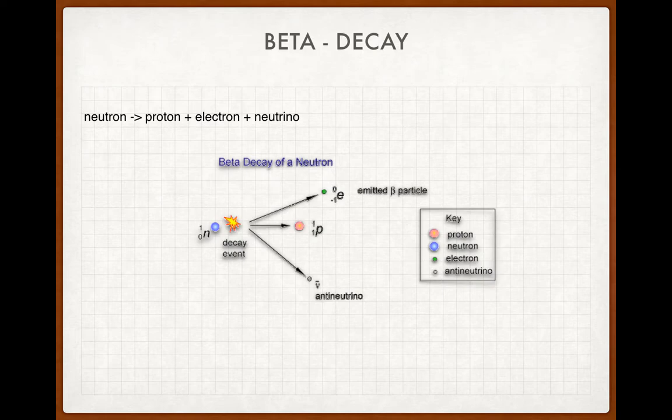So we have a little diagram there. We have the neutron on the left hand side, and the neutron decays, gives out a beta particle, becomes a proton, and gives out a neutrino. And as a result, the three things that should be conserved are conserved: energy, mass, momentum, and electric charge.